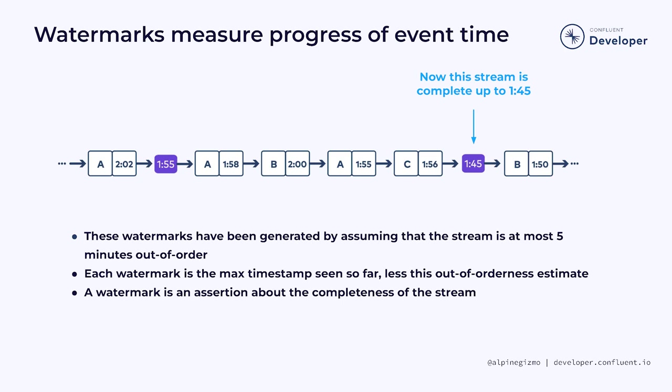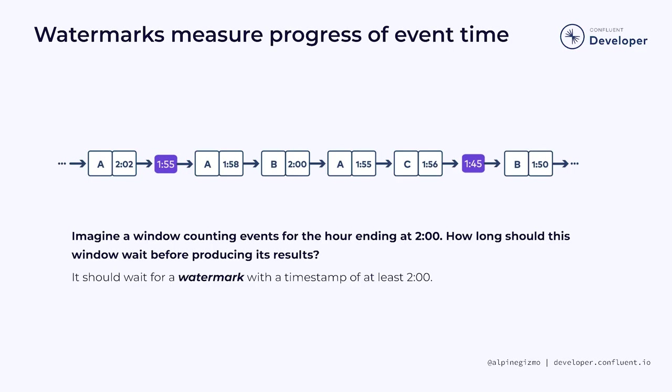If earlier events do occur, they violate our assumption that the stream is no more than 5 minutes out of order, and such events will be considered late. Depending on what you are doing, late events might be ignored. We started this discussion with the question of how long our window operator should continue processing the stream before closing the window that ends at 2 o'clock. The window should continue until it sees a watermark at or beyond 2 o'clock. Flink's window operator relies on watermarks to know when to produce results.